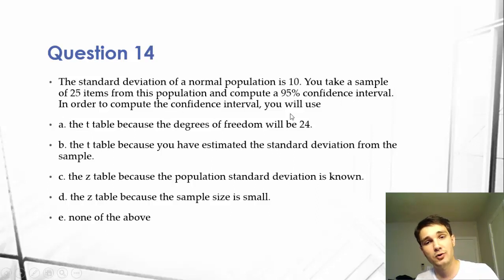In order to compute the confidence interval, you will use a t-table with the degrees of freedom being 24, a t-table because you have estimated the standard deviation from the sample, the z-table because the population standard deviation is known, or the z-table because the sample size is small.